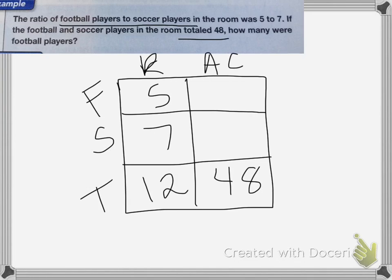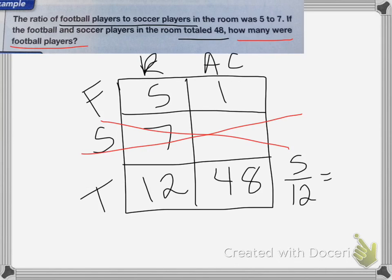Again, I need to look to see what it's asking. It wants to know how many were football players. I don't need to know how many soccer players there are, so I'm going to cross that column off. Now I can make my proportion. I have 5 over 12 equals my football players over 48.